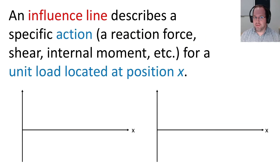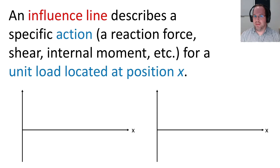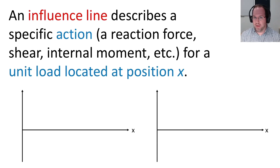So an influence line describes a specific action — that can be a reaction force, a shear force internal to the beam, or an internal moment at some specific location — for a moving unit load at position X. When we say unit load, we just mean it has a quantity of one with whatever unit we want to attach to that. So that can be a pound, a kip, or a car.